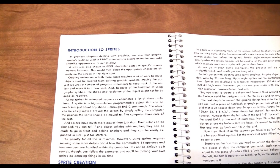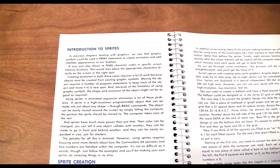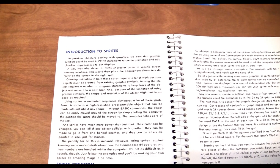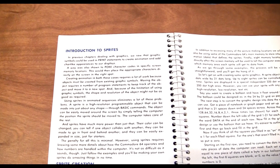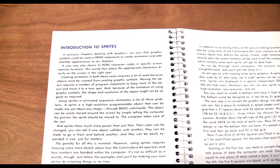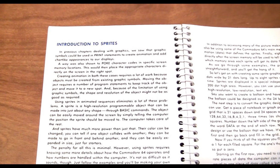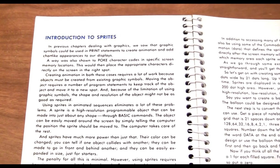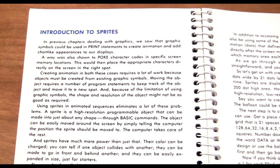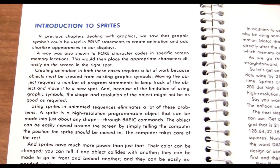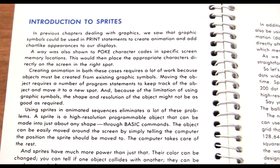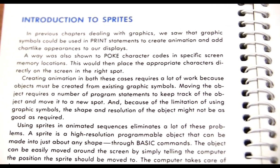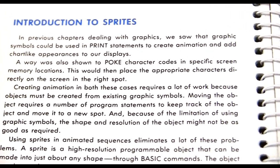What is a sprite actually? The C64 user's manual defines them this way: a sprite is a high-resolution programmed object that can be made into just about any shape through basic commands. The object can be easily moved around the screen by simply telling the computer the position the sprite should be moved to. Further, their color can be changed, you can tell if one object collides into another, they can be made to go in front of and behind one another, and they can be easily expanded in size.